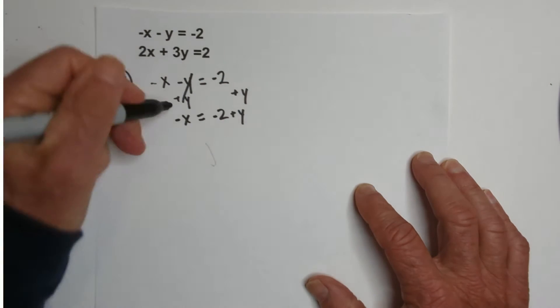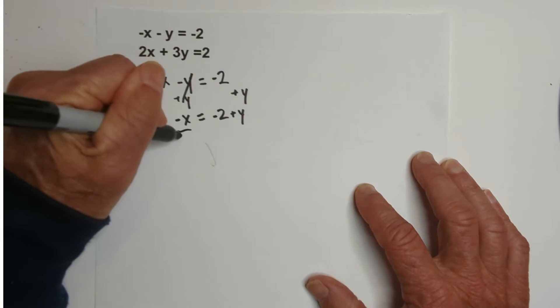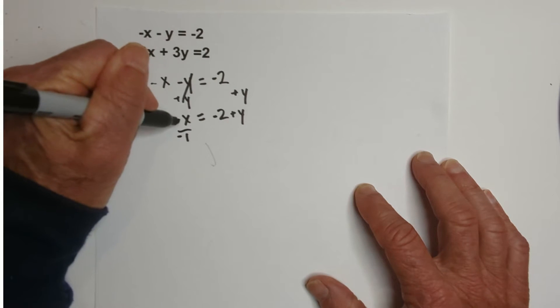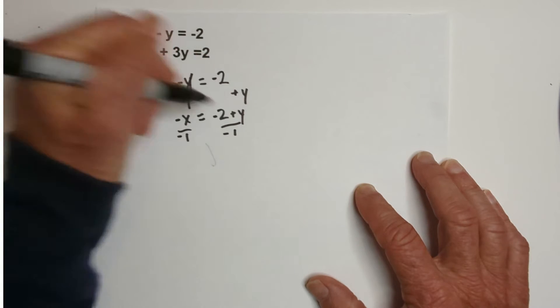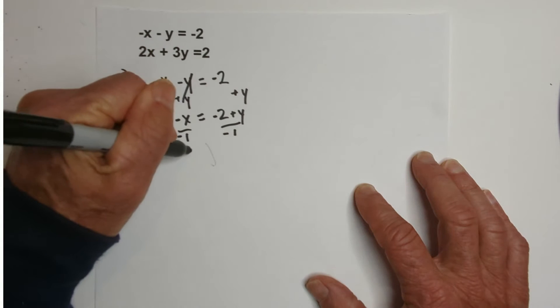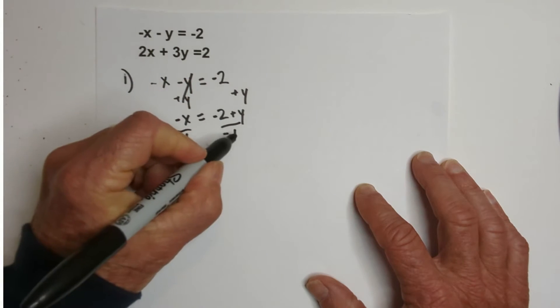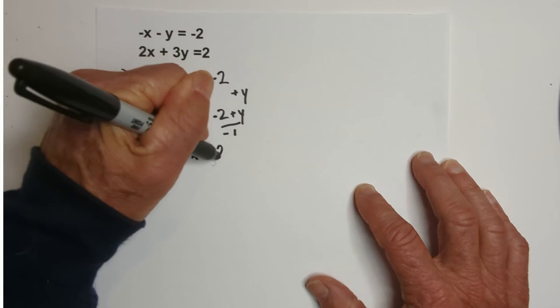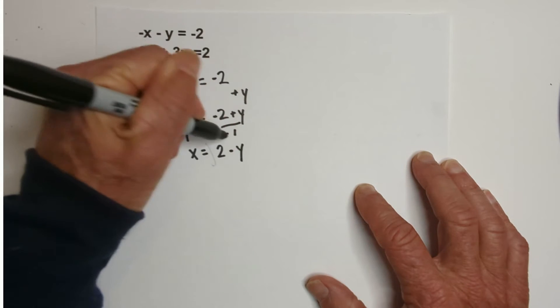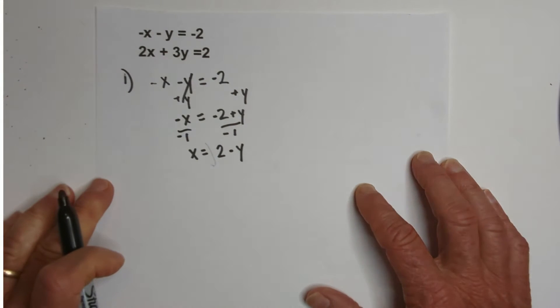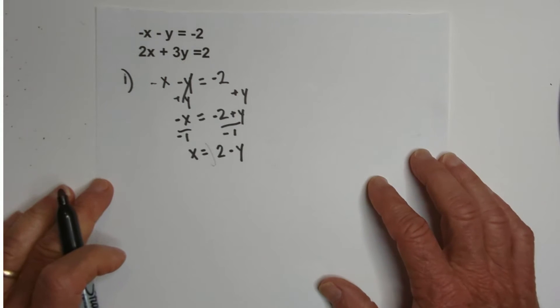Now, I need to divide by -1 because the negative sign is like a -1. And when I do this, I have x equals a negative and negative is a positive 2 - y because a negative and a positive. So, now I have a value for x.